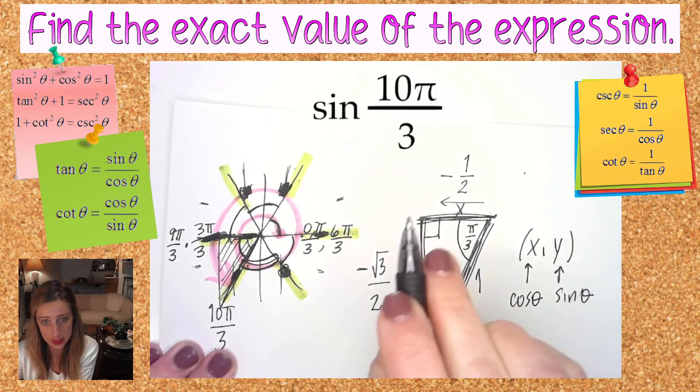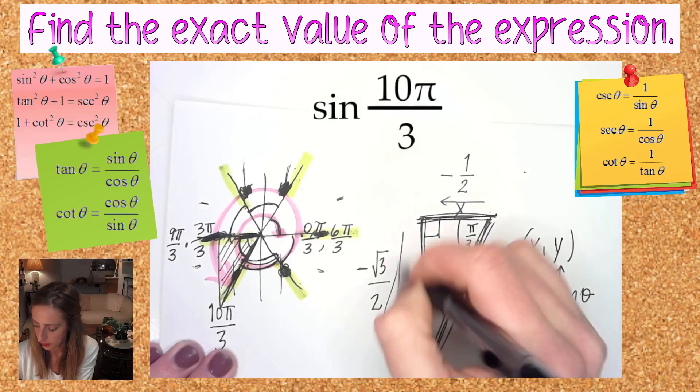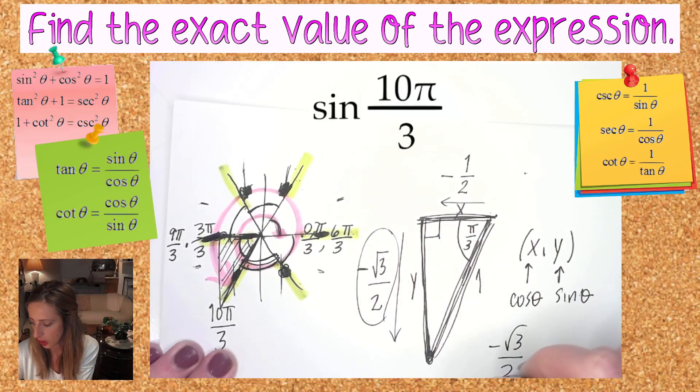So if I'm looking for the sine of 10π over 3, it is negative root 3 over 2. That is the answer.